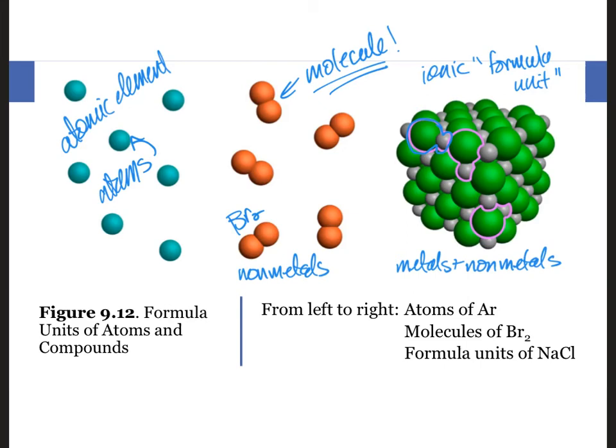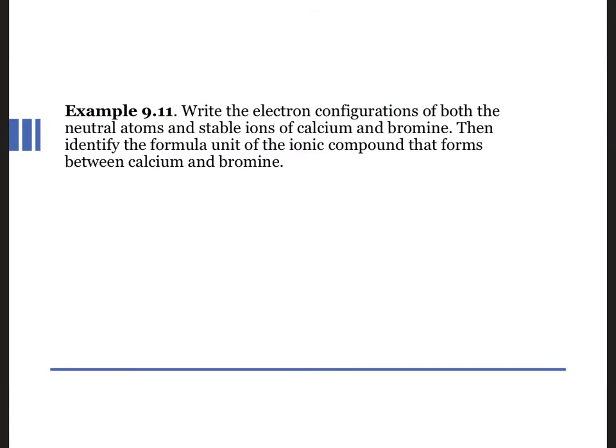Let's work through another ionic bonding example. We're going to write the electron configurations for the neutral atoms of calcium and bromine to discover what the most reasonable formula unit will be in the resulting ionic compound.